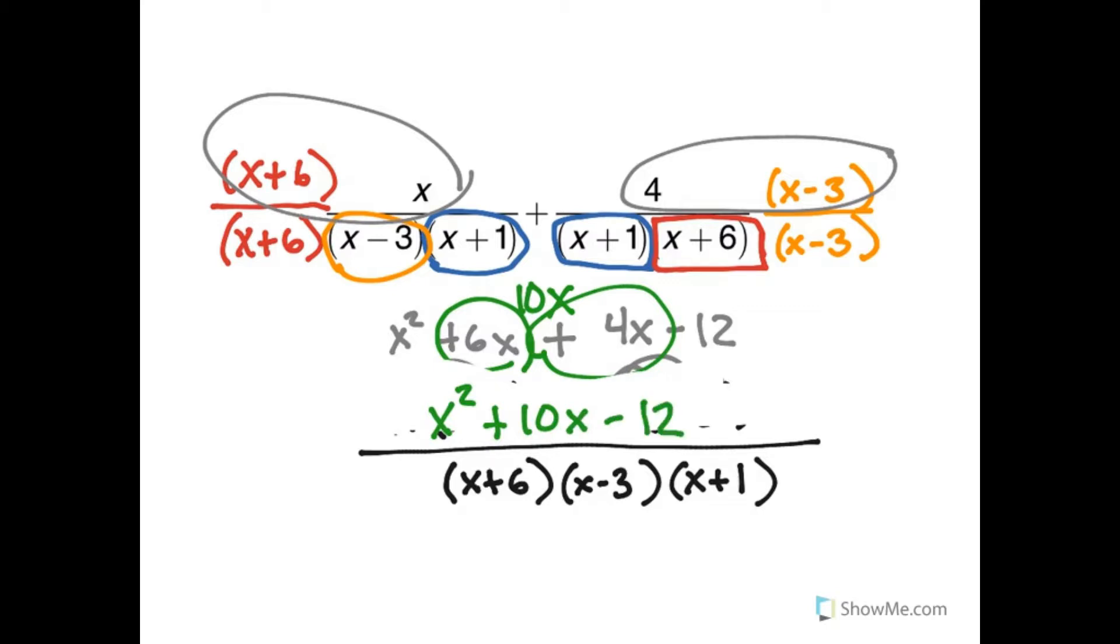Now, is that factorable? Well, the factors of negative 12 are 1 and 12, 2 and 6, and 3 and 4. Since it's negative, I need the difference between them. But I don't see anything that gives me a difference of 10.